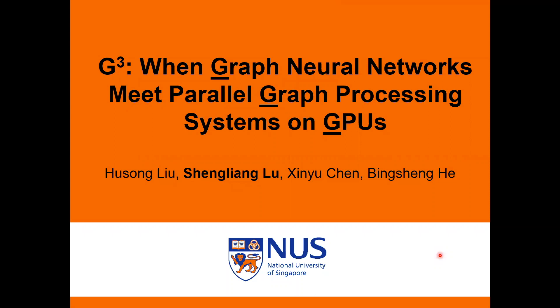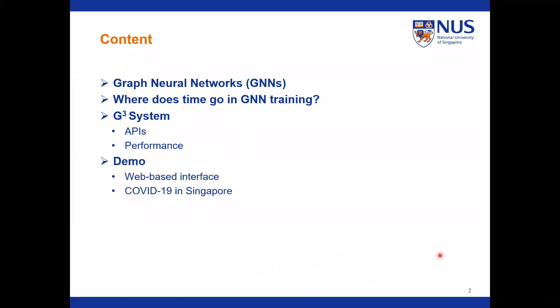Hi, everyone. I will present a paper co-authored by Hu Song Liu, Shengliang Lu, Xin Yuchen, and Bing Shenghe. This work is a graph neural network training system that leverages a parallel graph processing system on GPUs. We will first briefly introduce GNN and its wide research interests in academia and industry, then point out that graph structure operations are the major bottlenecks in popular GNN training systems. This motivates us to propose GQ, followed by a web-based interface demonstration and a case study of predicting COVID-19 cases in Singapore.